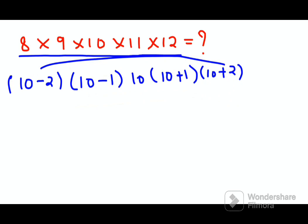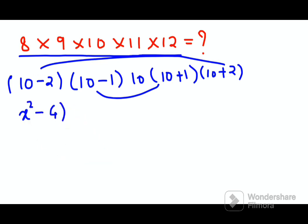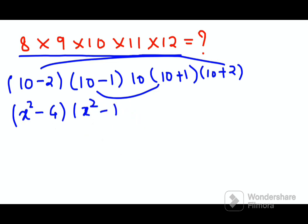Let's club the pairs and take x = 10 to make it easier. So we have (x² - 4) from (10-2)(10+2), then (x² - 1) from (10-1)(10+1), and then the single 10 which is just x.